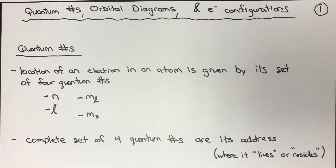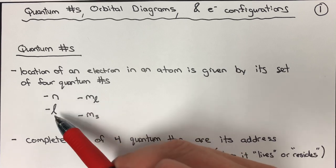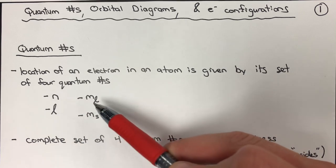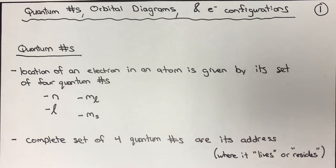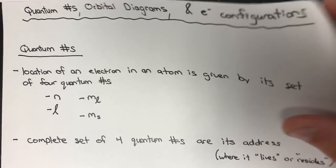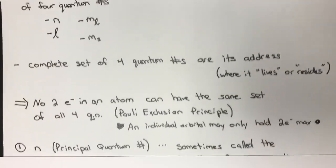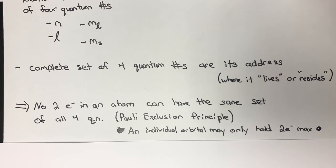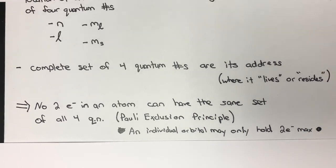Quantum numbers basically just describe the location of an electron in an atom. There are four different quantum numbers we're going to focus on: n, L, m sub L, and m sub s. Having a complete set of four quantum numbers basically gives an electron's address — where it lives, where it resides. No two electrons within an atom can have the exact same set of all four quantum numbers, and this is what we refer to as the Pauli exclusion principle.